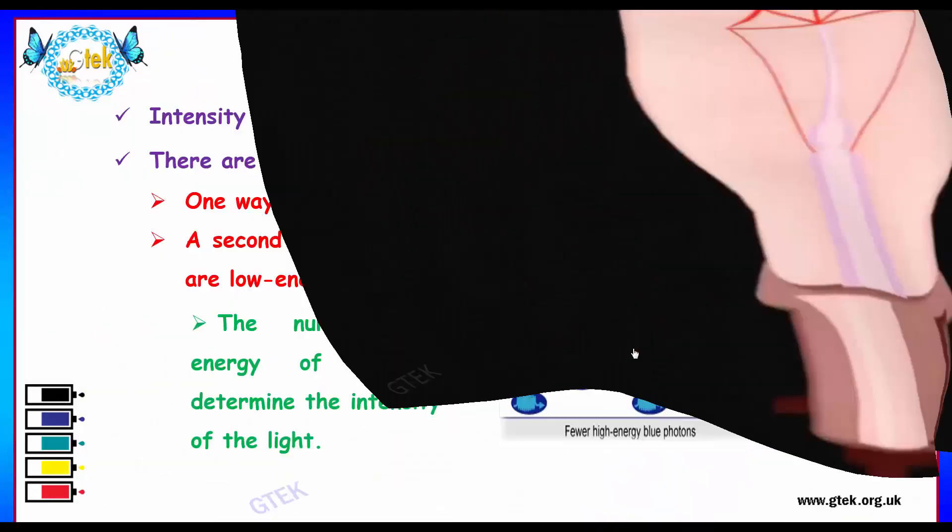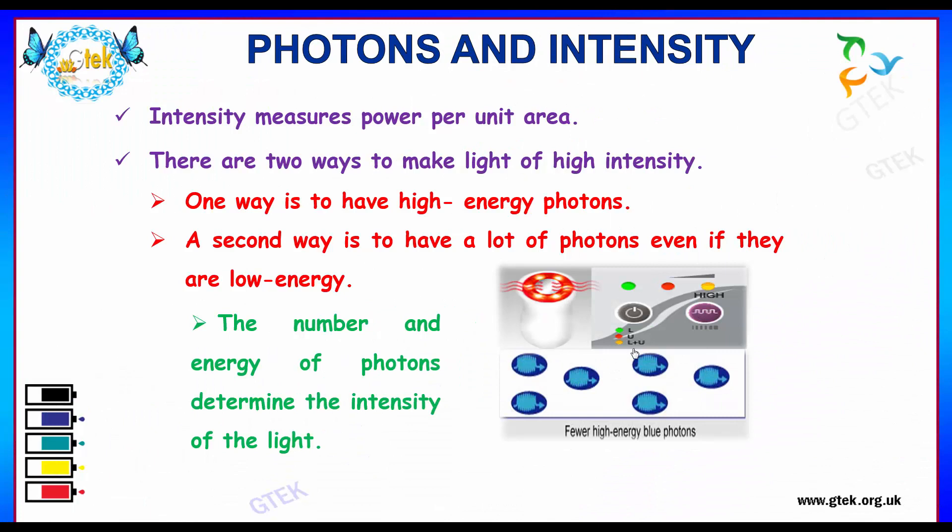Intensity measures power per unit area. There are actually two ways to make light of high intensity. One way is to have high energy photons, and the second way is to have a lot of photons even if they are low energy. The number and energy of photons determines the intensity of the light.